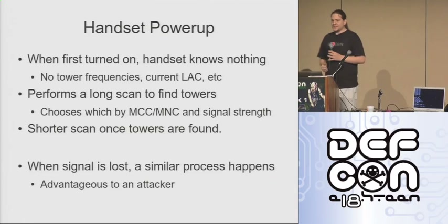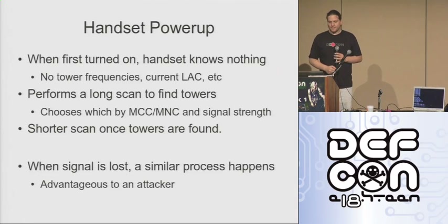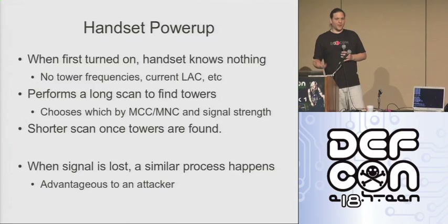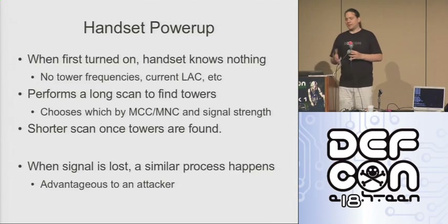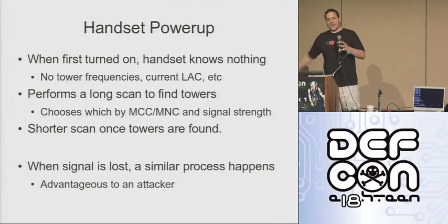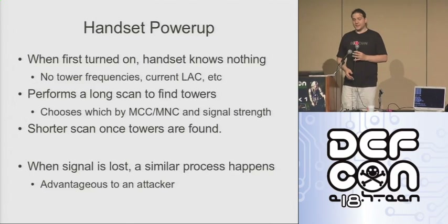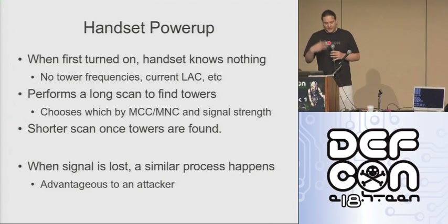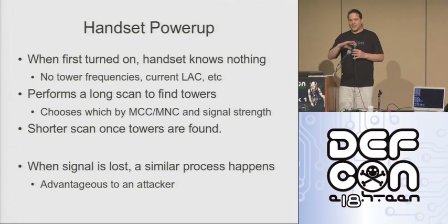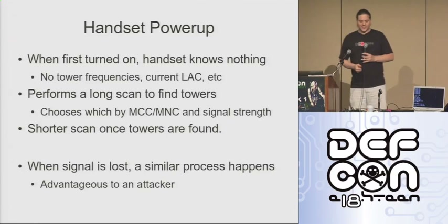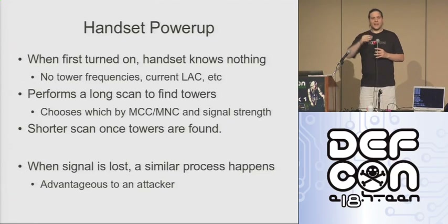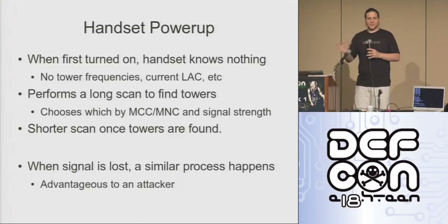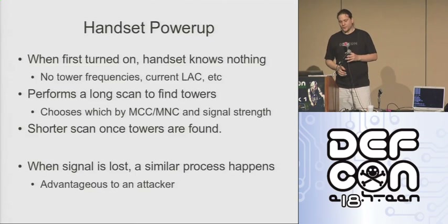So what happens when the handset turns on? How does the handset first find its very first tower? When it boots up it knows nothing — it doesn't know where it is, what frequency it's on, it doesn't have any neighbors to look for, it doesn't know the current LAC. So it does a very long scan over the entire band. Whatever towers it finds, it checks the MNC and the MCC, tries to make sure those are allowed networks based on what the SIM card will actually connect to, and then signal strength as well — it'll just connect to the strongest tower. Once it starts finding some towers, it limits the size of that scan and performs a much smaller scan much more rapidly because it has information about what bands are in use, what towers are in use, what channels to look for.